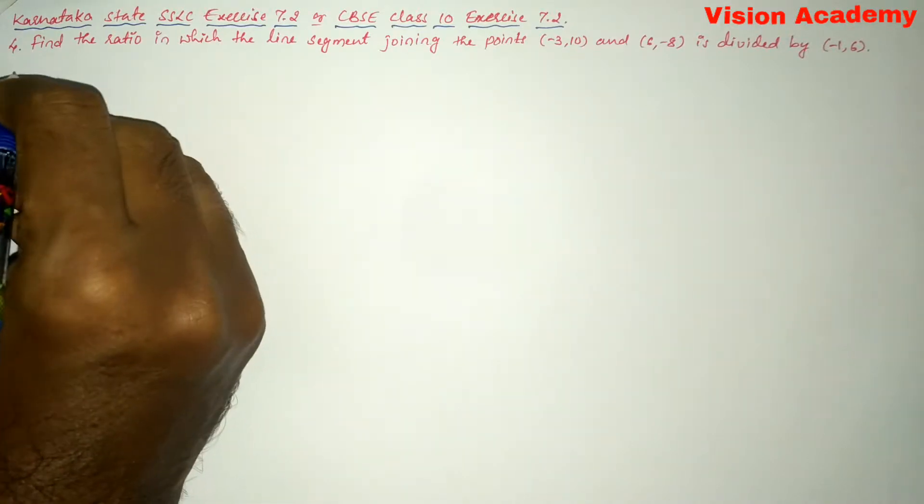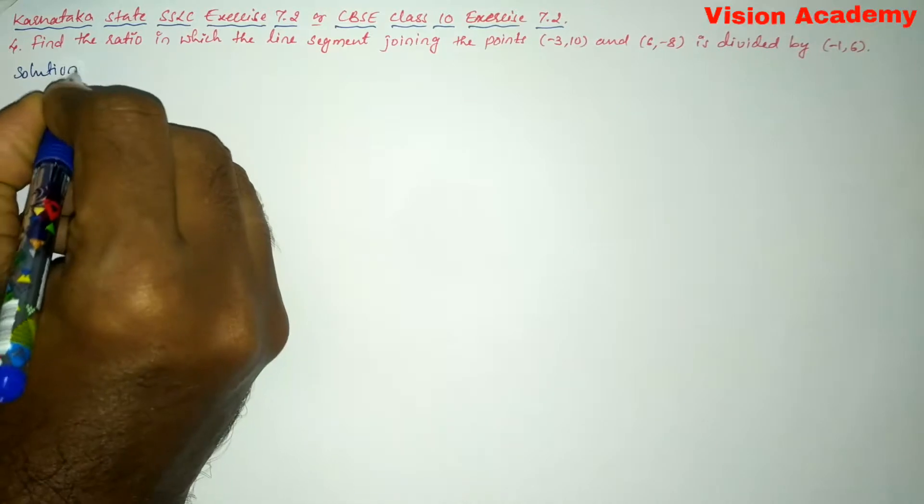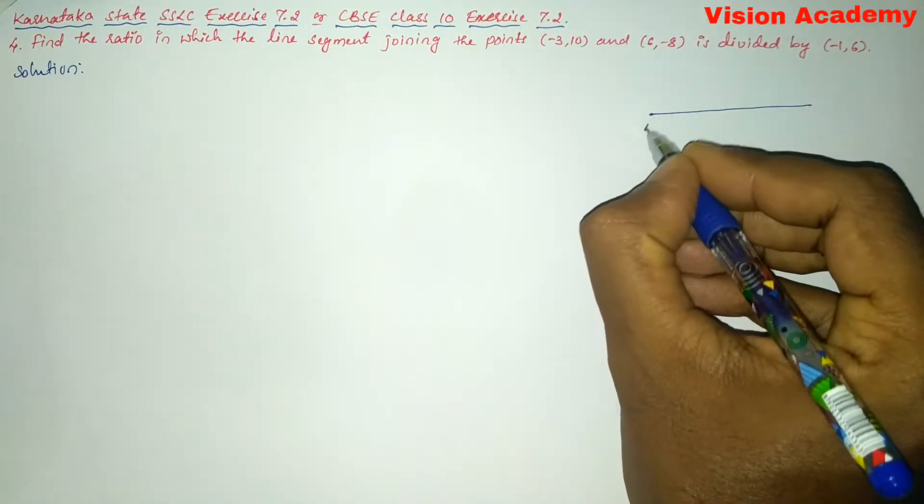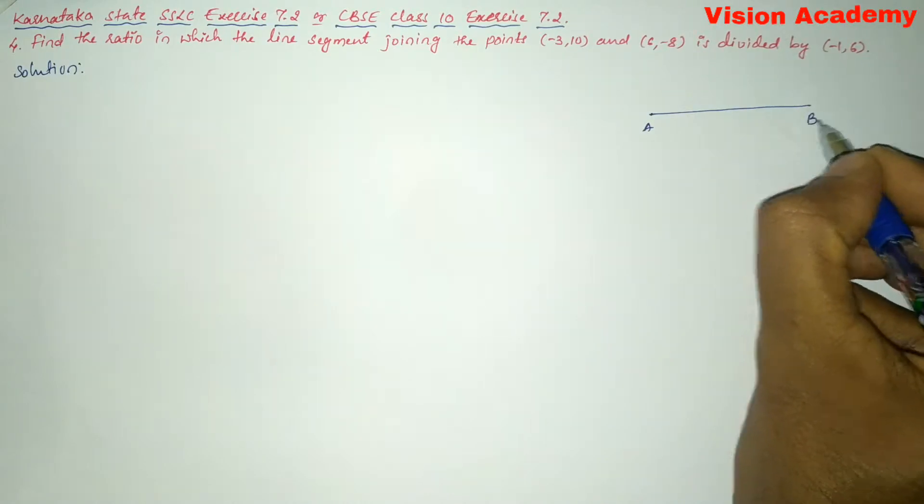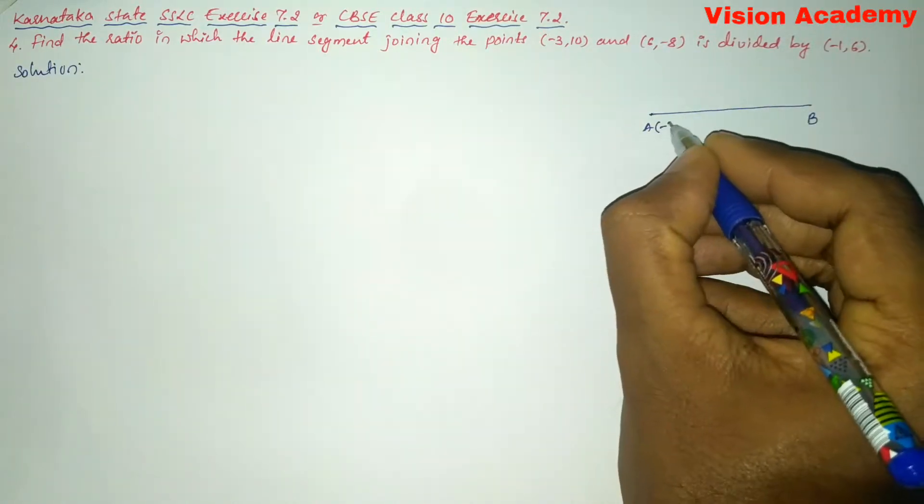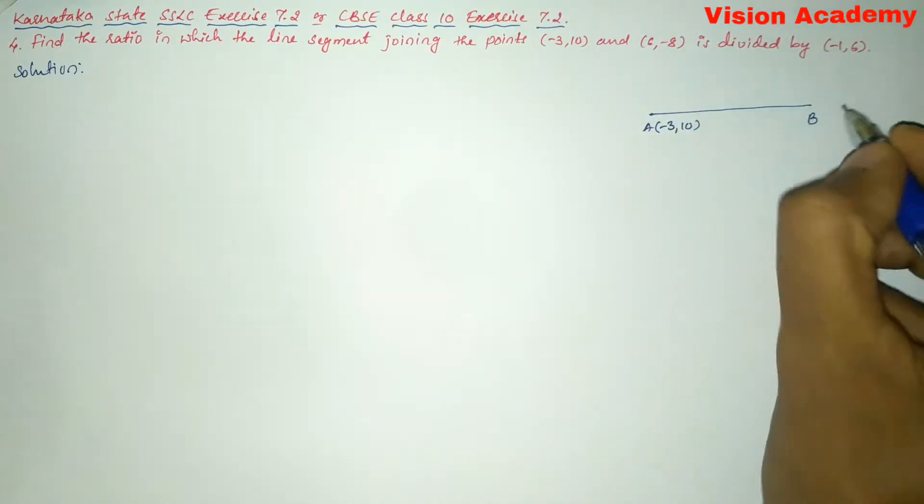Now, let us find the solution for the given problem. Here, let me draw a line segment called AB. The coordinates of A are (-3, 10) and the coordinates of B are (6, -8).